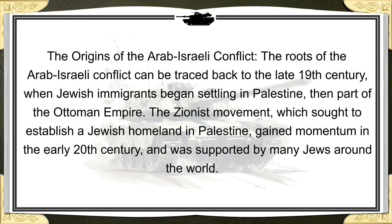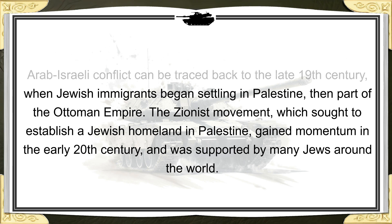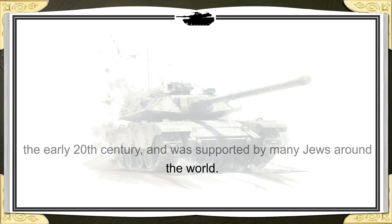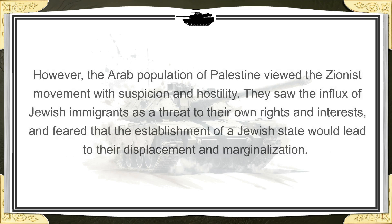The origins of the Arab-Israeli conflict can be traced back to the late 19th century when Jewish immigrants began settling in Palestine, then part of the Ottoman Empire. The Zionist movement, which sought to establish a Jewish homeland in Palestine, gained momentum in the early 20th century and was supported by many Jews around the world. However, the Arab population of Palestine viewed the Zionist movement with suspicion and hostility.